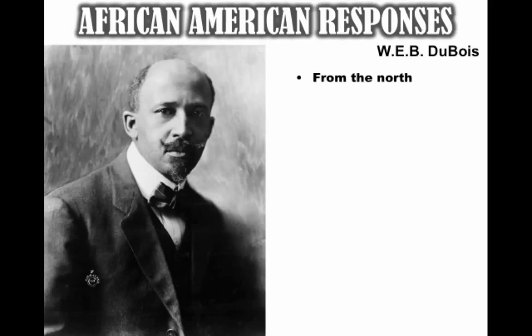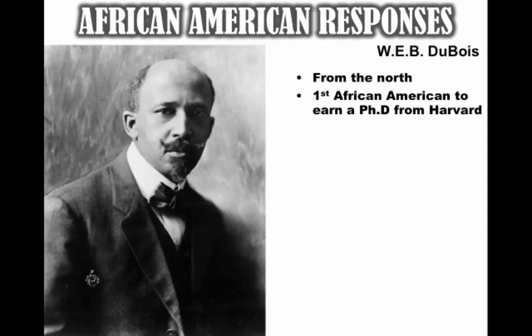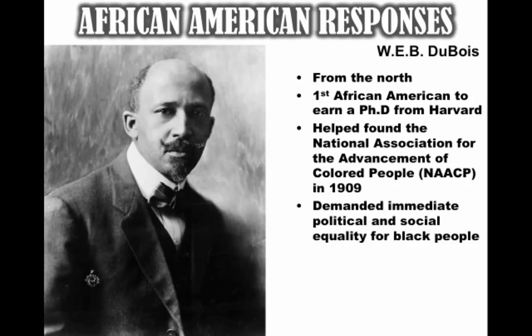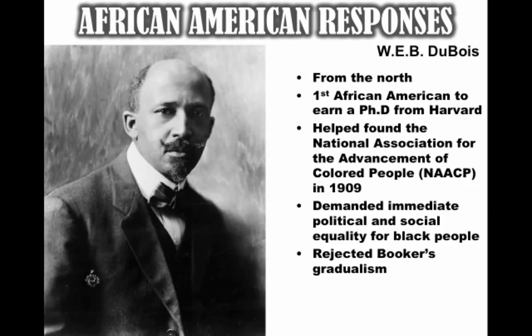On the opposite end was W.E.B. Du Bois, from the North — from Massachusetts. He is the first African American to receive a PhD from Harvard. He helps create the NAACP in 1909. He is different from Booker T. in that he demanded immediate political and social equality for black people — that African Americans should become intellectuals and resist prejudice and racism wherever they could. He rejects Booker T.'s gradualism, and they both offer very unique visions for African American liberation. In his book The Souls of Black Folk, Du Bois advocated that the 'talented tenth' in the black community should become the intellectuals to lead African Americans towards greater civil rights.